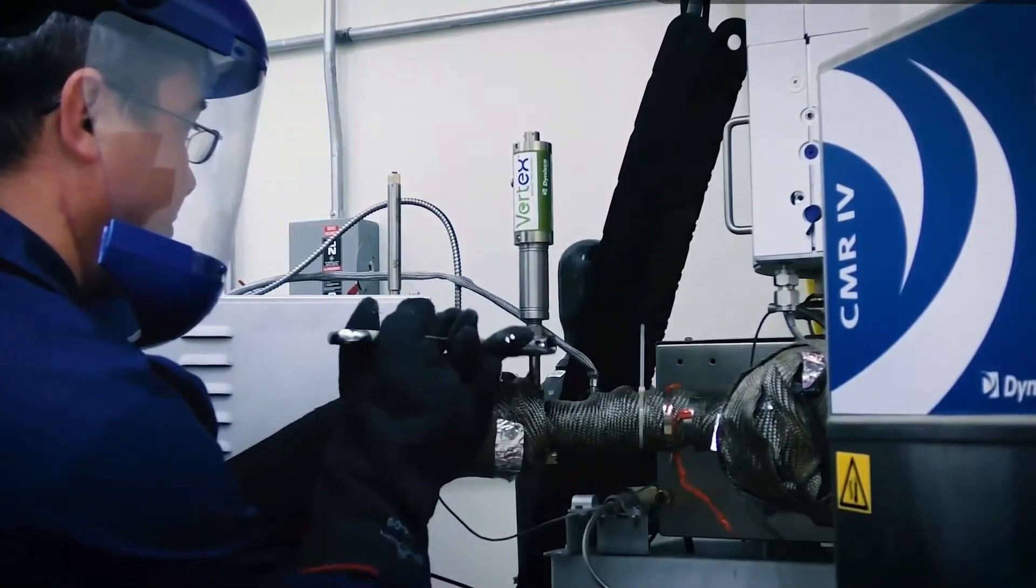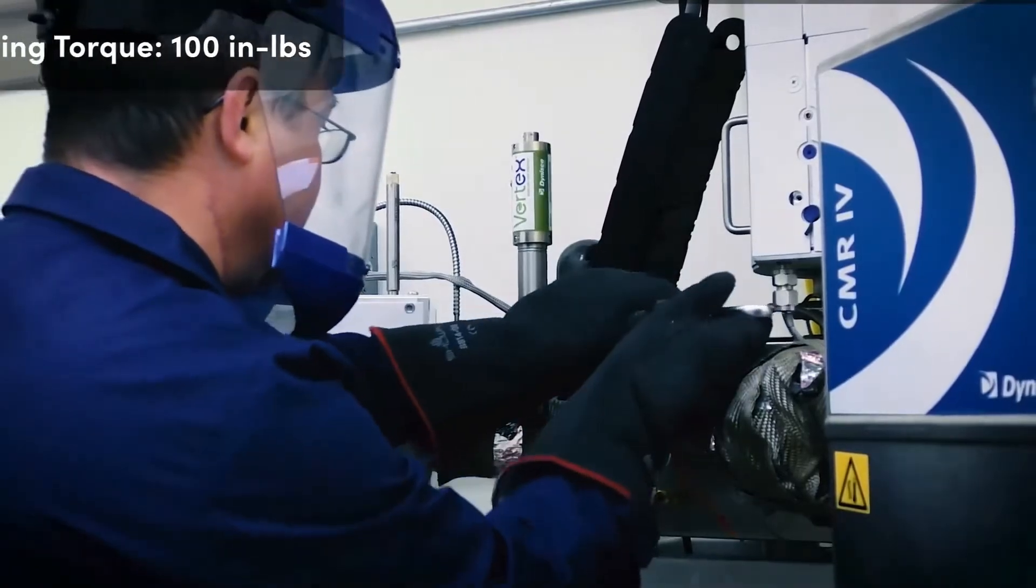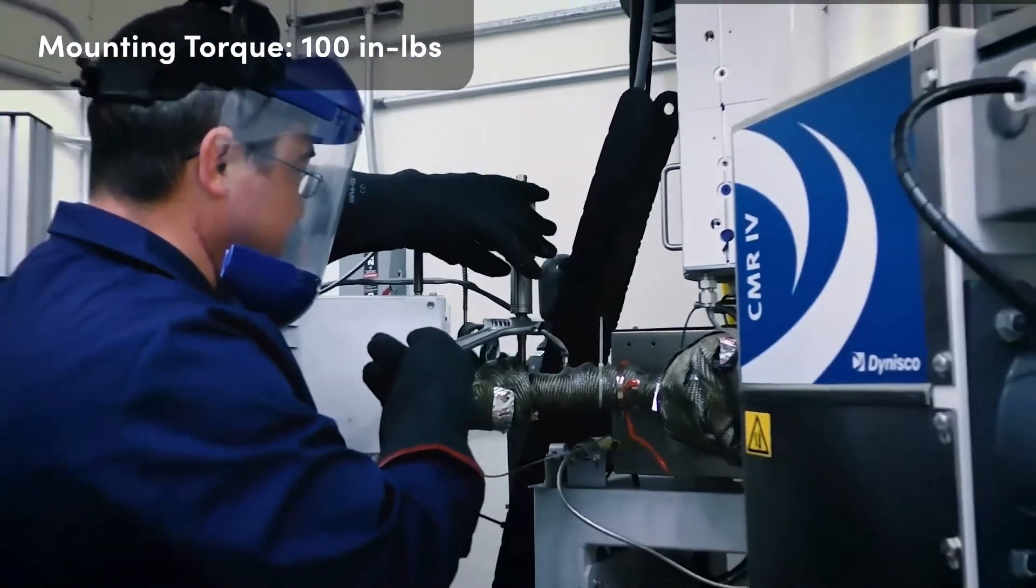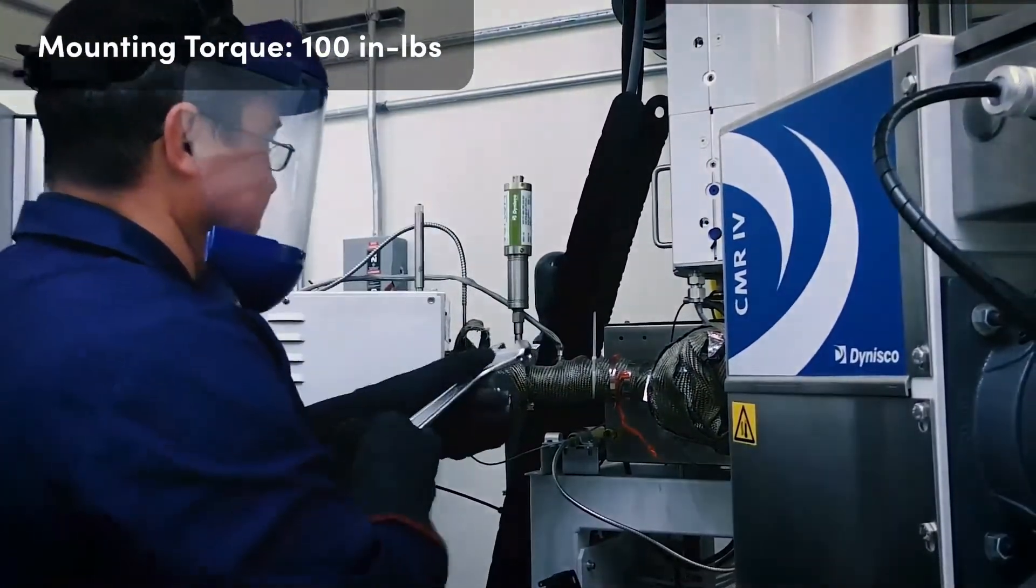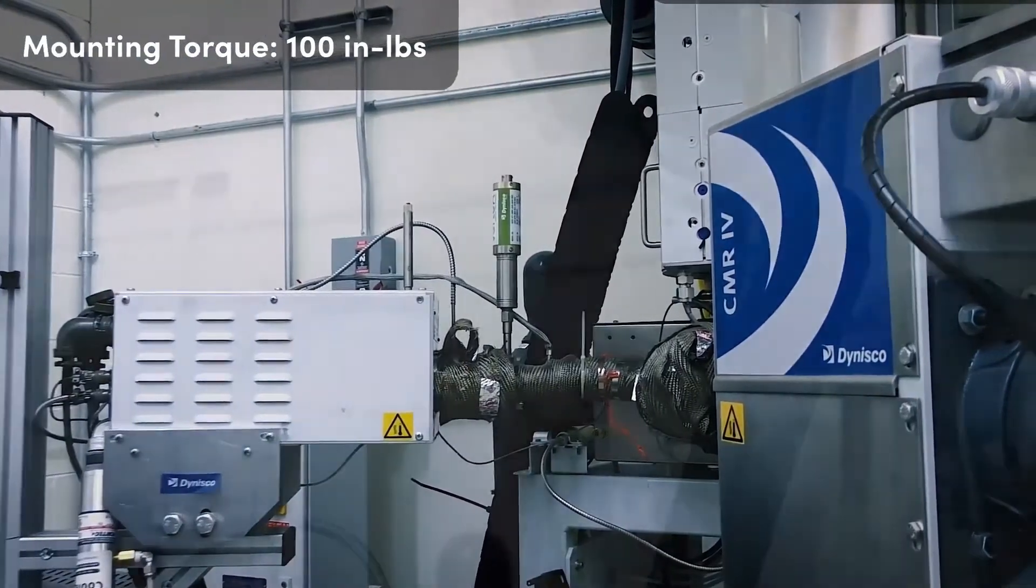For the 1.5-20 UNF threaded pressure sensor, the recommended torque is 100 inch-pounds. Hand tight and a quarter turn is the best practice.